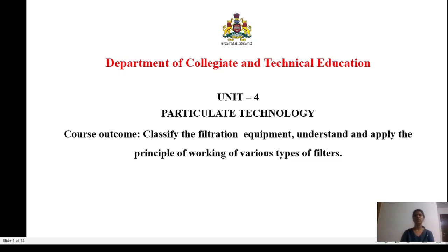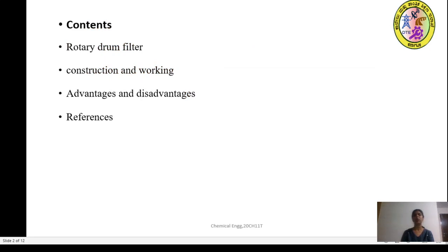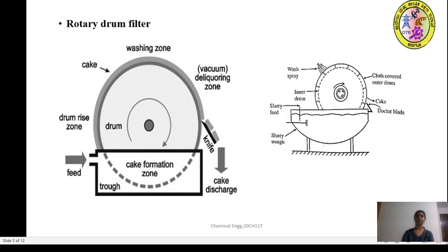In continuation with these sessions, in this session we will learn about another filtration equipment — that is a rotary drum filter — the construction and the working part of it, and what are the advantages and disadvantages of using the rotary drum filters, and the references which have been made in learning this session.